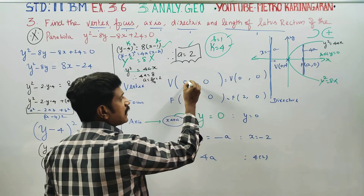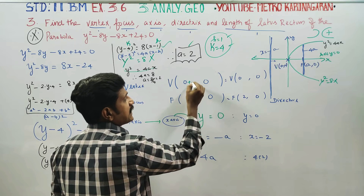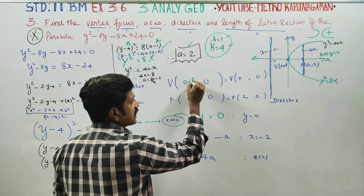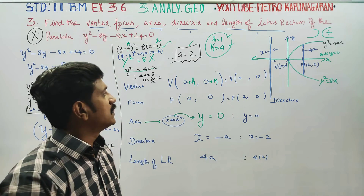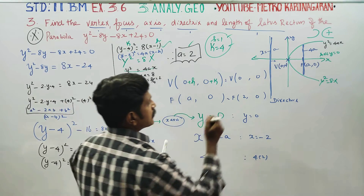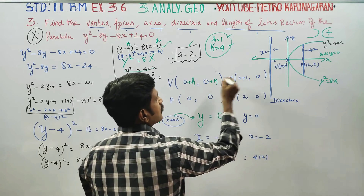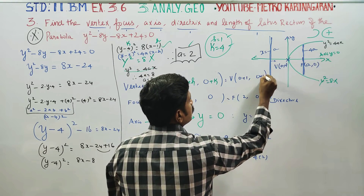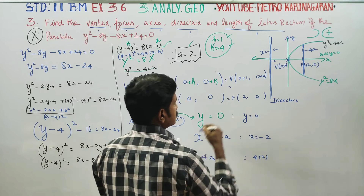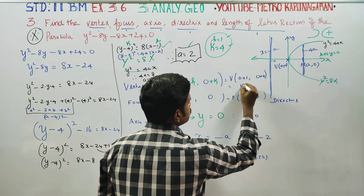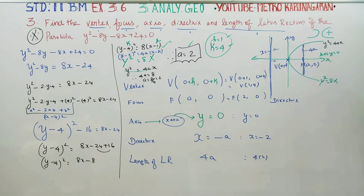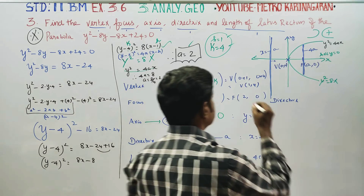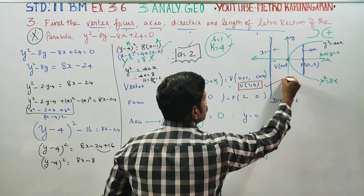Using h and k: for x part, add h; for y part, add k. The vertex answer: x part gets h = 1 added, y part gets k = 4 added. Vertex answer is (1, 4). Vertex is done. This part earns a mark.